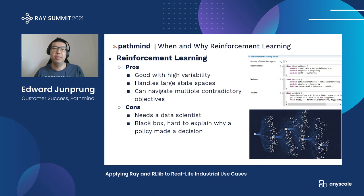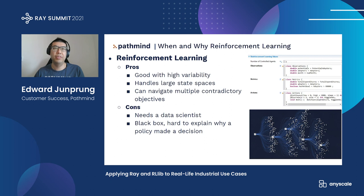A third consideration is a use case with multiple contradictory objectives. For example, in a factory where you want to maximize throughput but also minimize costs, if you told an optimizer to minimize costs, it would basically just turn off production — which is not a good outcome. As for cons, the two biggest are that you need a data scientist, who are hard to find and expensive, and reinforcement learning is a black box — it's hard to explain why it made a decision, which makes it difficult to sell to a factory manager or upper management.